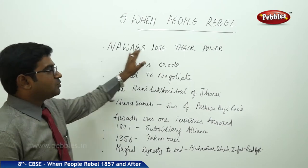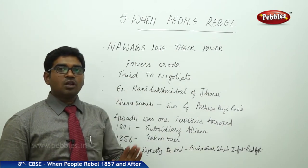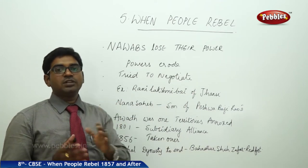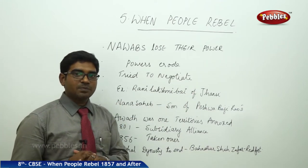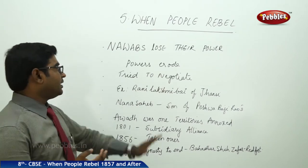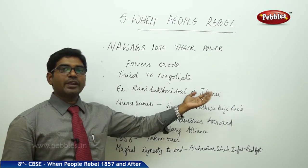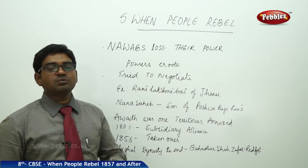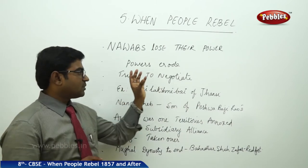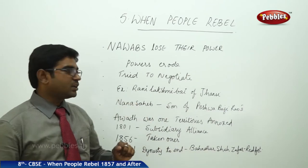So, from the Nawabs to the Mughals, everybody slowly lost their powers. It was the Nawabs who lost power first — the Nawab of Bengal, the Nawab of Awadh, the Nawab of the Uda region — all of them lost their powers in one battle or another. Many of the kings who tried to negotiate to protect their kingdoms also failed and lost their territories.